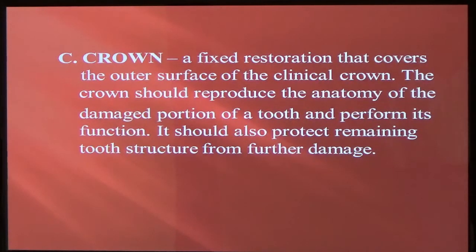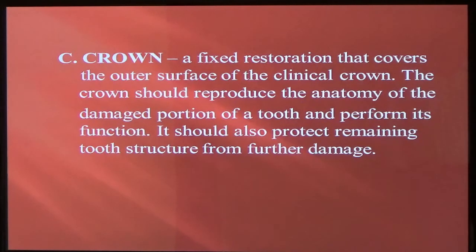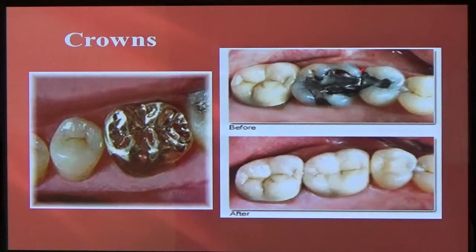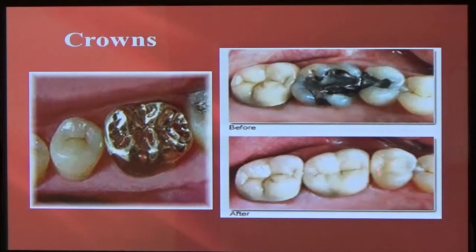A crown is a restoration that covers the entire clinical crown of the tooth. If the tooth is too worn down or there's not enough healthy tooth structure to just replace a filling, then we have to put a crown — it covers the entire surface of the tooth. Here we have a gold crown — you can see how it covers the entire biting surface and also the buccal and the lingual. Here's an example of a tooth that has a very large restoration that's failing, so you remove it and put an all-porcelain crown.